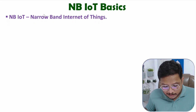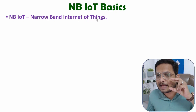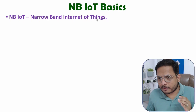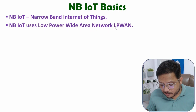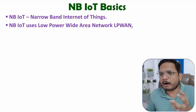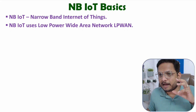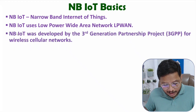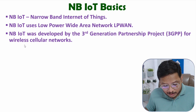NB-IoT stands for narrowband internet of things. Devices communicate with narrow bandwidth, which means they function at low power. NB-IoT uses a low power wide area network, also referred to as LPWAN. That wide area network is created using cellular networks. NB-IoT was developed by the third generation partnership project, 3GPP, for wireless cellular networks.